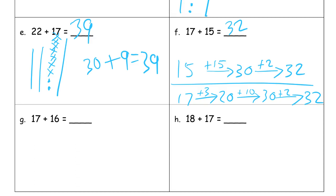17 plus 16. Let's use number bonds for this: 10 and 6. I'm going to add the 10 first. And then I can count up the 6 from the 27: 28, 29, 30, 31, 32, 33.